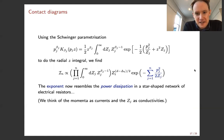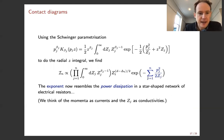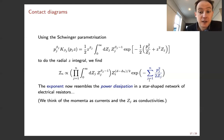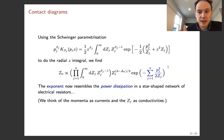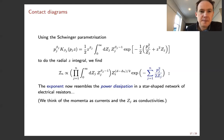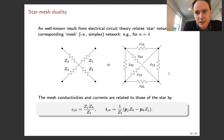The key observation is that the exponent can be thought of as the power dissipation in a star-shaped network of electrical resistors. It's been known for a long time that there are analogies between Feynman integrals and electrical circuits: once you Schwinger-parameterize and put propagators into the exponent, you get something like a Gaussian integral whose exponent is the power dissipation in an electrical circuit. In this analogy, the external momenta p are like currents, and the Schwinger parameters Z are the conductivities. Power equals current squared divided by conductivity.